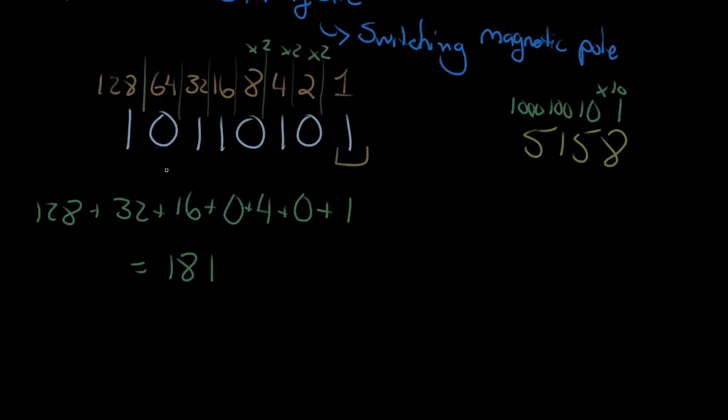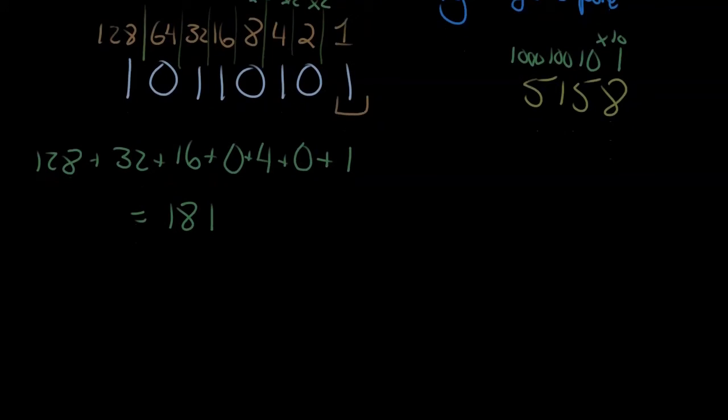This is 181. That's pretty easy. If you ever have a binary number, just write these numbers down on top, just keep doubling from 1 as far as you need to go. Then just go through, and if you have a 1 in that place, just add it together and you get your binary number done.